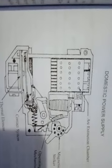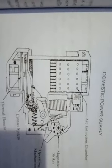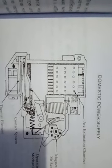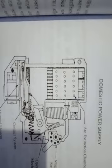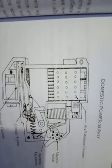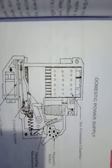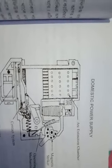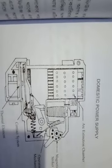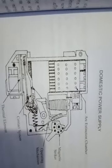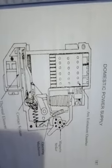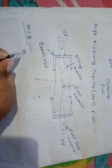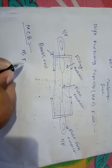The cross-sectional view of the MCB shows different parts: the thermal element, contact system, operating mechanism, magnetic strip, and arc extinction chamber. This is the cross-sectional view of an MCB.